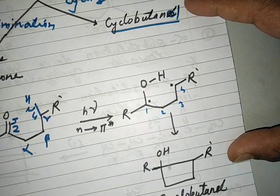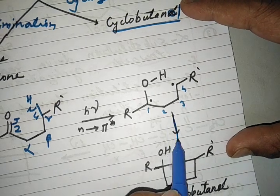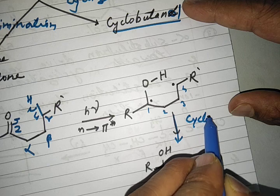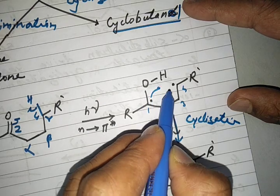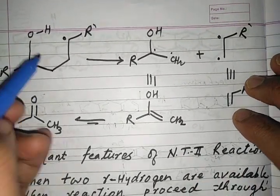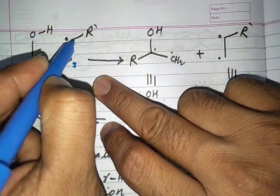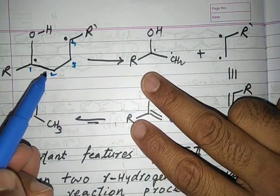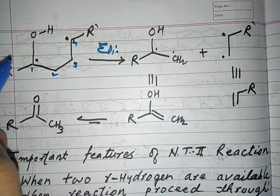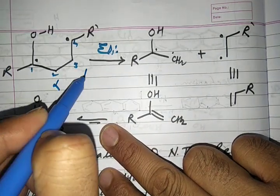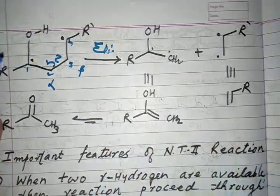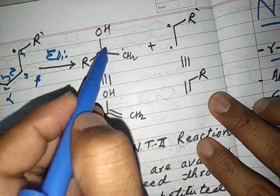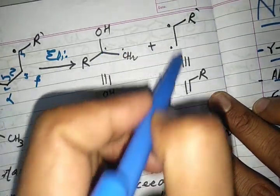The 1,4-diradical has two fates. First, if it undergoes cyclization, the two radical ends combine to form cyclobutanol — very simple. Second, if it undergoes elimination, the alpha–beta bond undergoes homolysis, two radicals form, they combine to form a double bond, giving an alkene.